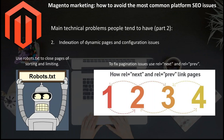The second issue over Magento is indexation of dynamic pages and configuration issues. This includes pagination, bad canonical tag implementation, duplicate products, etc. Please don't forget to close all pages of sorting and limiting in your robots.txt. Pagination issues on Magento should be fixed with rel-next and rel-prev. Also, all filtration and dynamic URLs — pages where the URL may change — should be canonical to their upper-level category or sub-category page.